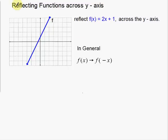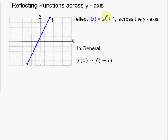For this first slide, I'm going to do reflecting functions across a y-axis. Now, if you remember your axes, this is the x-axis and this is the y-axis. What I'm going to do is reflect across the y-axis. Basically, this part here on the right is going to go to the left, and this part on the left is going to go to the right. I'm going to reflect this function — the blue one — f of x equals 2x plus 1 across the y-axis.